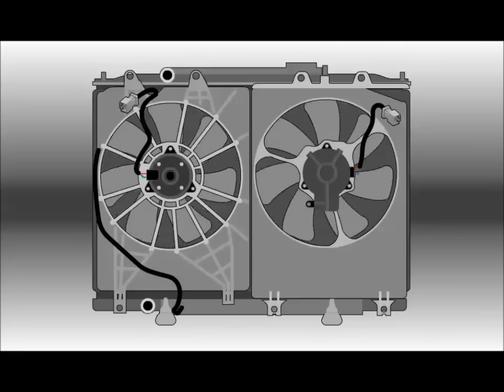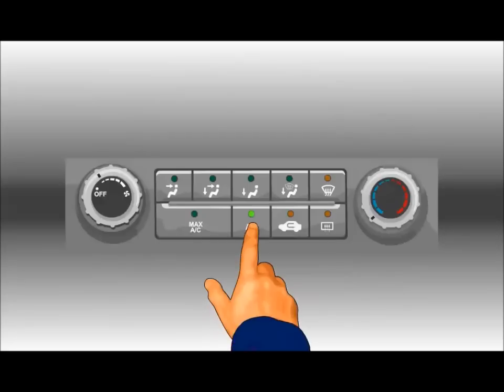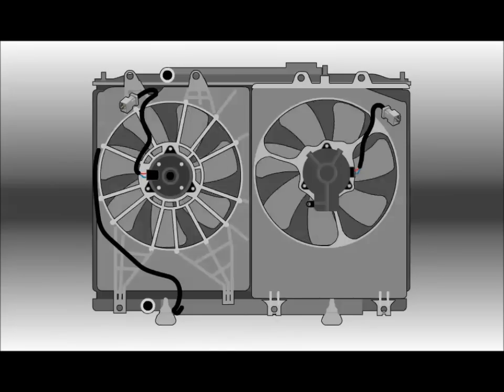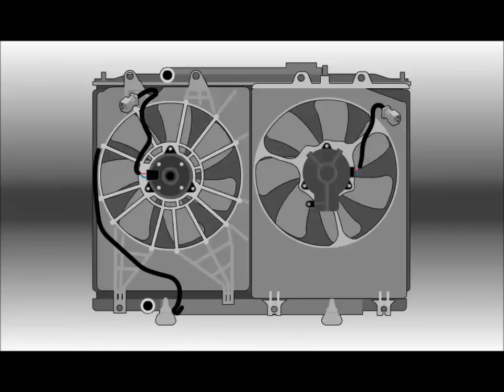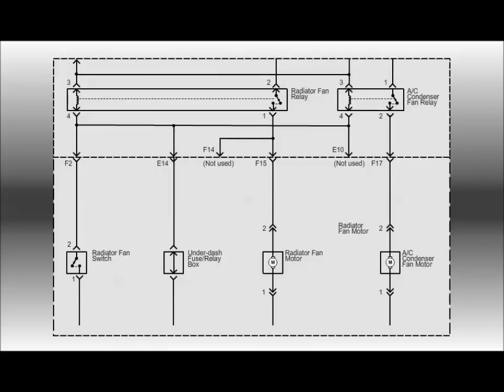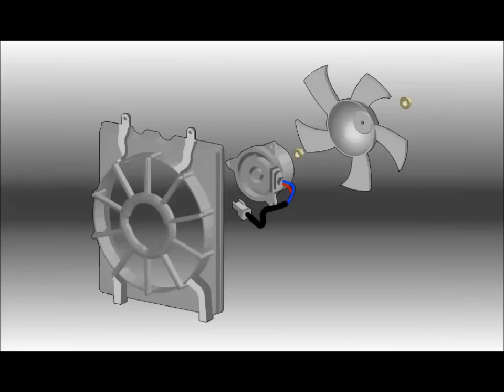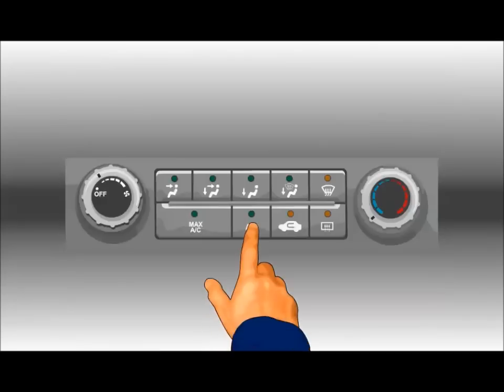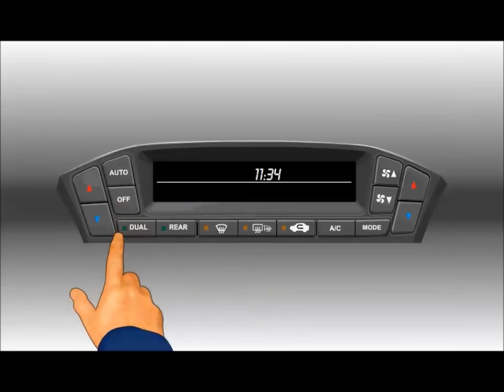To check the fans on cars with an air conditioning compressor, start the engine and press the AC button or set the climate control to the lowest temperature. With the air conditioning on, the cooling fans should turn on. If the fans do not run, check for a problem with the fan circuit or fan motors. If the fans do run, the circuit is good. Turn off the air conditioning or climate control and go to the next step.